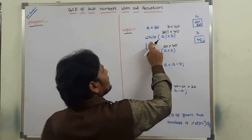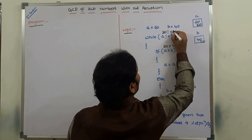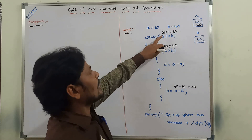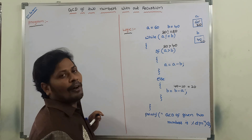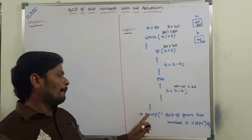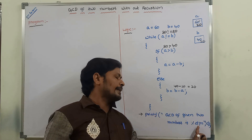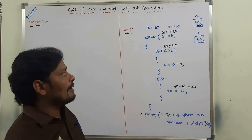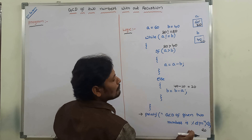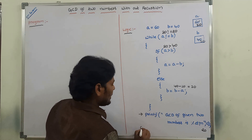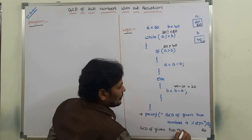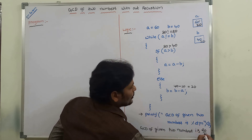Again, control goes to the while loop. While A not equal to B: A value is 20, B value is also 20. 20 not equal to 20 — that is false. If this condition is false, the control goes to the next statement after the while loop. The next statement after the while loop is the printf: GCD of given two numbers is %d, with variable A. A value is 20, so 20 is printed. Output is: GCD of given two numbers is 20.